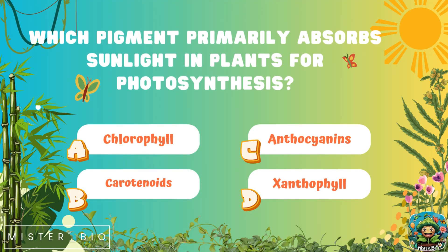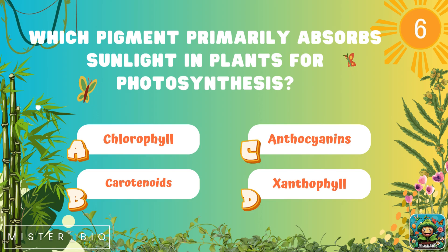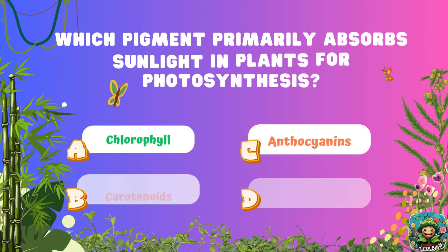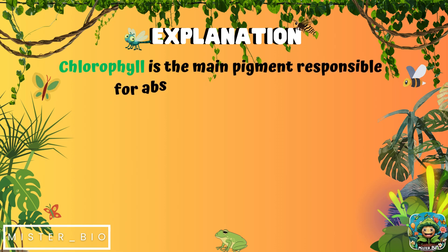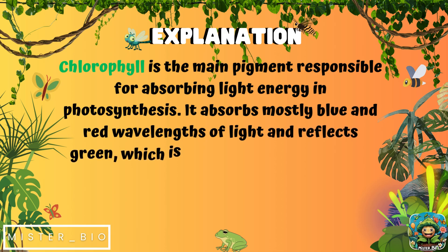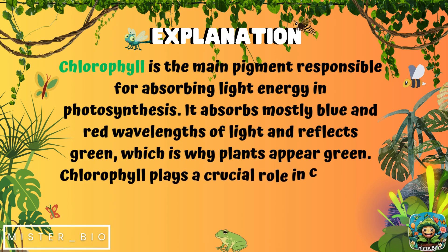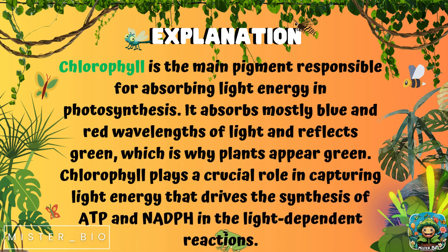Which pigment primarily absorbs sunlight in plants for photosynthesis? A) chlorophyll, B) carotenoids, C) anthocyanin, or D) xanthophyll. The correct answer is A, chlorophyll. Chlorophyll is the main pigment responsible for absorbing light energy in photosynthesis. It absorbs mostly blue and red wavelengths of light and reflects green, which is why plants appear green. Chlorophyll plays a crucial role in capturing light energy that drives the synthesis of ATP and NADPH in the light-dependent reactions.